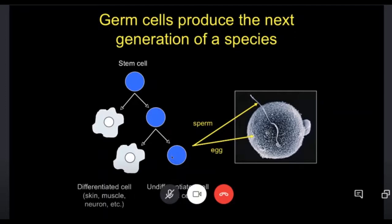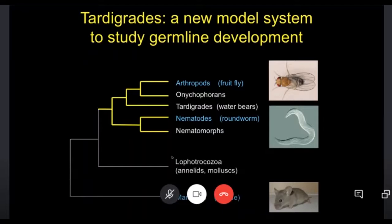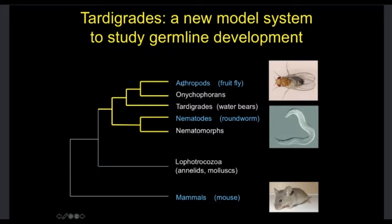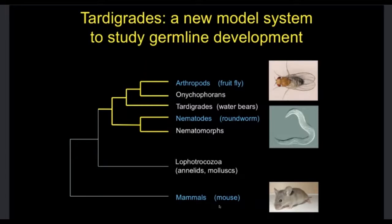But we still have a lot of unanswered questions. For example, how do germ cells evolve? How do different animals adopt different mechanisms to make germ cells? And to address a good question, we needed to identify an organism that shares some relationship with more well-studied systems but might provide more information on how these processes work. We know a lot about fruit fly, nematode, and mouse development in terms of how germ cells are formed, but we can't really say a lot about how germ cells might have arisen or evolved from a common ancestor.